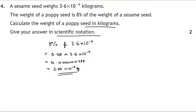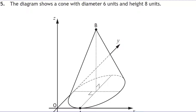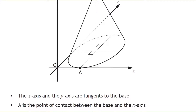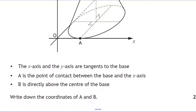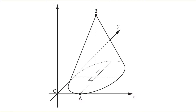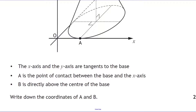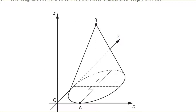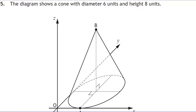Question five shows a cone with a diameter of six units and a height of eight units. The x and y axes are tangents to the base — they just touch at one point. Point A is the contact between the base and the x-axis; point B is directly above the centre of the base, at the tip of the cone.